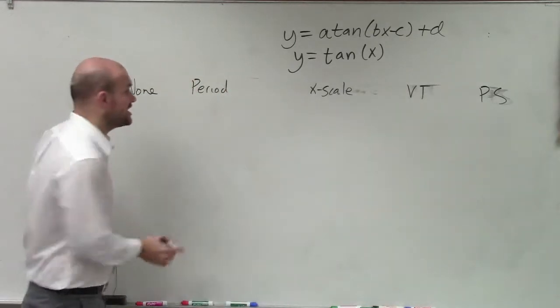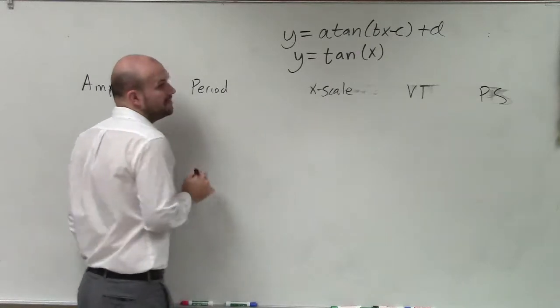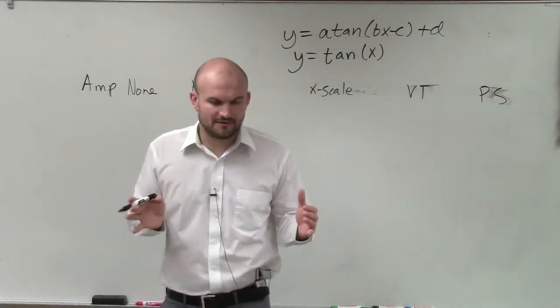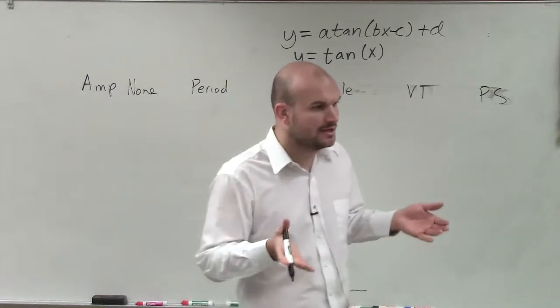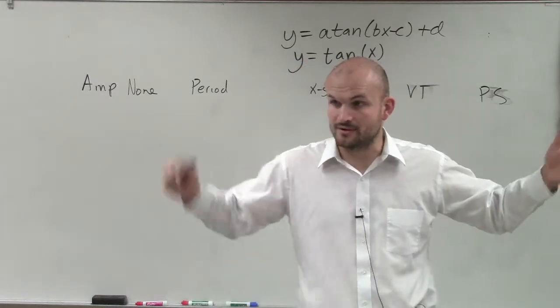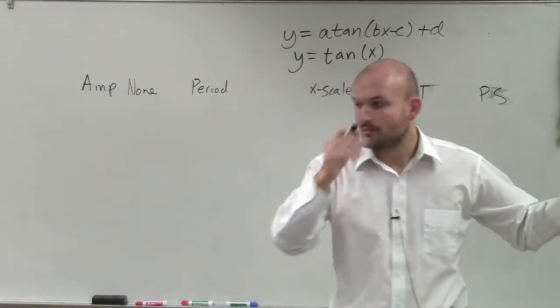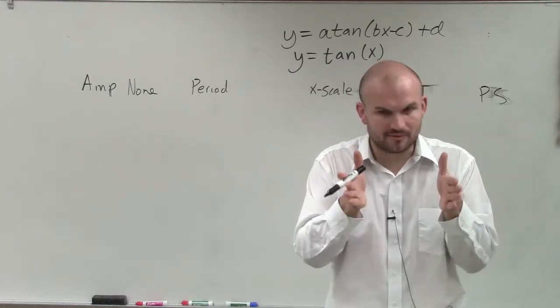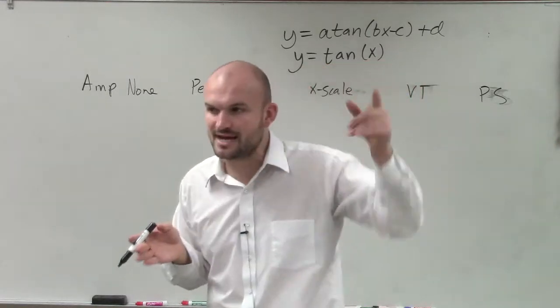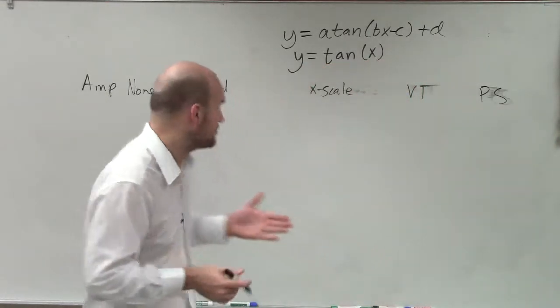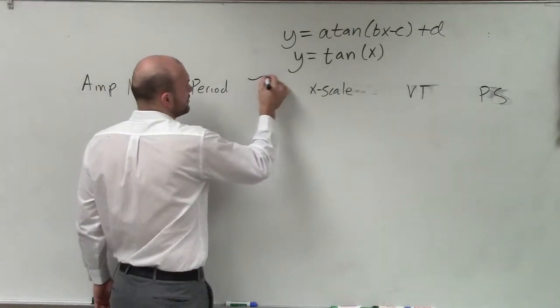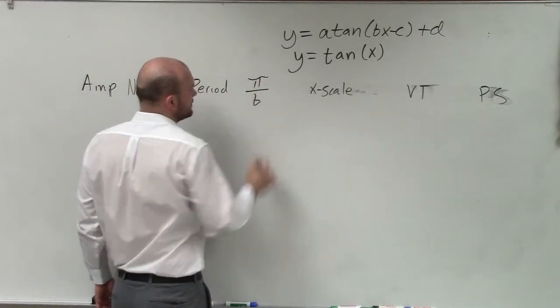Now, period - this is a change. As you guys hopefully notice, if you remember, the period for sine and cosine was 2π divided by b. It went up and out and up. Well, you guys hopefully notice that this period was a period to complete the cycle between an asymptote and an asymptote. So the period is smaller, which is just going to be π divided by b.